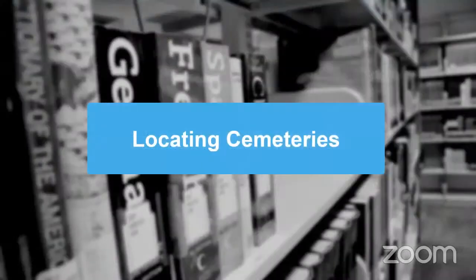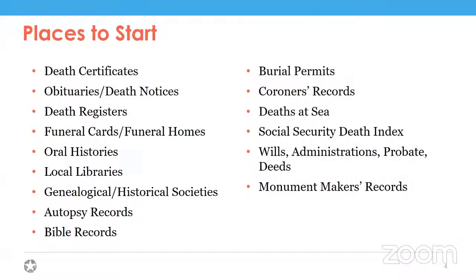The very first thing we have to do is locate the cemeteries where your ancestors are buried. The most obvious places to start are things like death certificates, obituaries, death notices, death registers, funeral cards, or programs from funeral homes if they have an archive. There are all sorts of different records and sources that might lead you to the cemetery where your ancestor is.